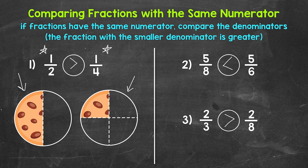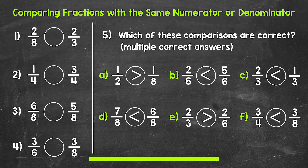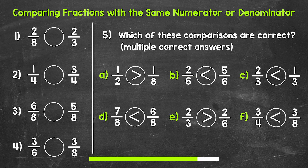So now that we've tried some practice problems together, it's time for you to try some on your own. Here are your practice problems. For numbers one through four, you have comparisons to solve. For number five, find the comparisons that are correct — the ones that are true. There are multiple correct answers for number five, so see if you can find them all. I'll give you two minutes and then we will go over the answers. Go ahead and start.